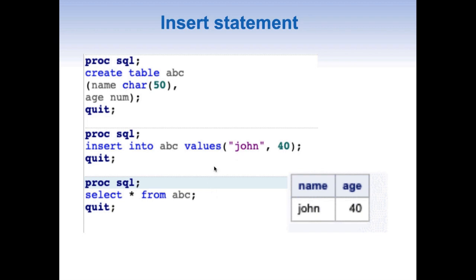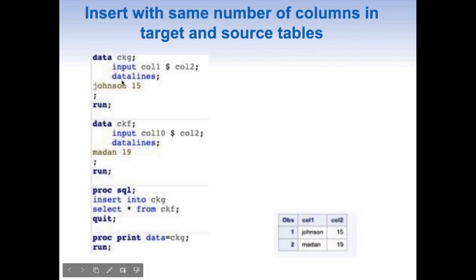The VALUES clause is generally not a preferred way of inserting rows, because whenever we want to insert another row we have to write a new insert statement each time. Most of the time we do inserts from other tables. Here we have two datasets: CKG, with variables col1 (character) and col2 (numeric), which already has 'johnson' and 15 as its data.